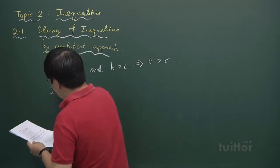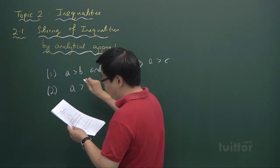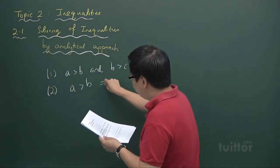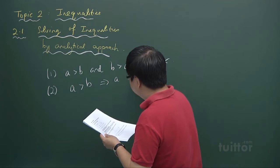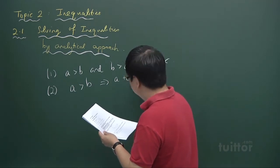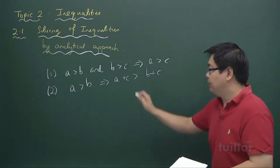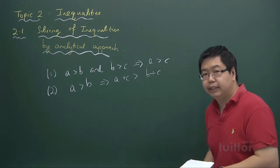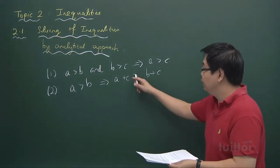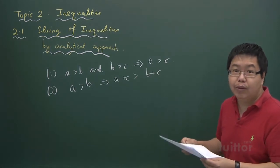The second property says that if A is greater than B, and you add a constant C to both sides of the inequality, or subtract both sides by the same value, it is not going to affect the inequality sign.